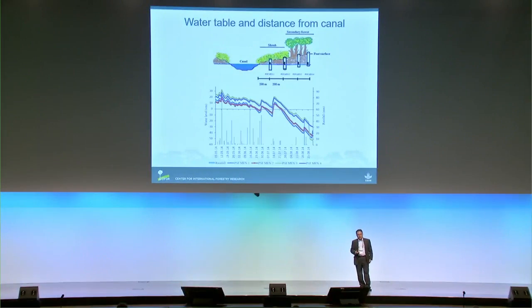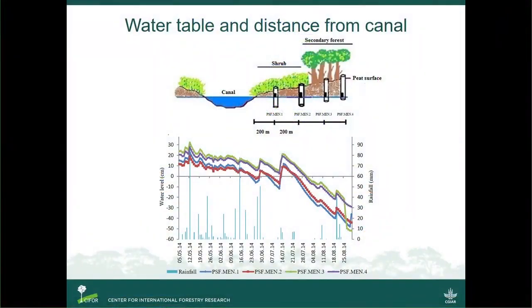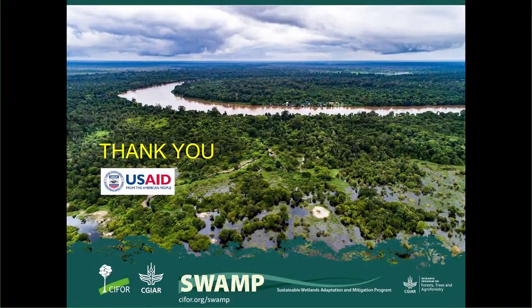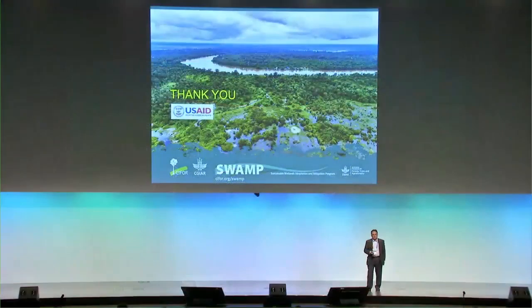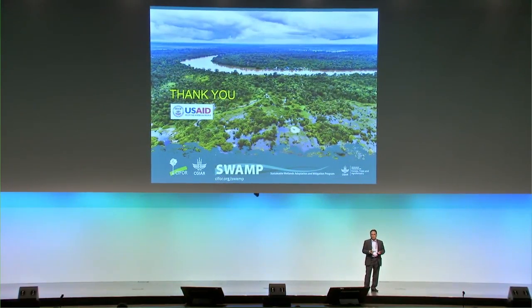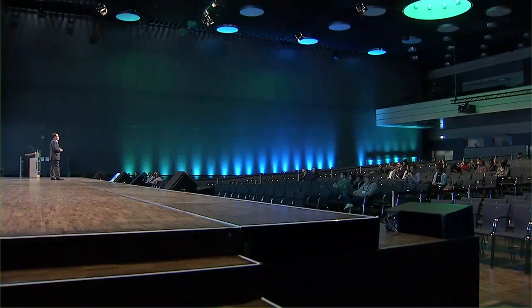We now have information at the district level across many areas demonstrating how peatland is degrading or being restored in terms of water table. In the future, we expect that the map we produced earlier this year will be used more extensively to help countries identify where degraded peatlands are and what kind of interventions are needed in terms of re-wetting and re-vegetating the area. Thank you very much.